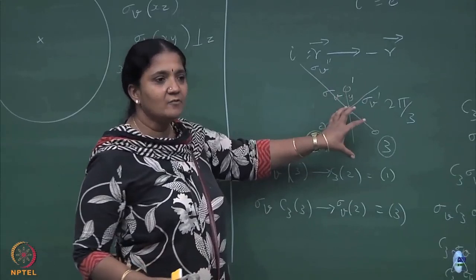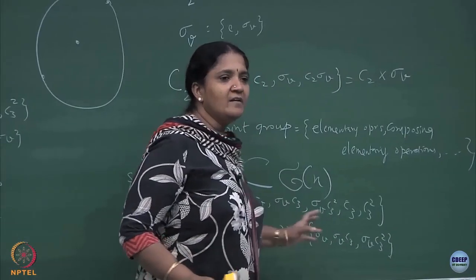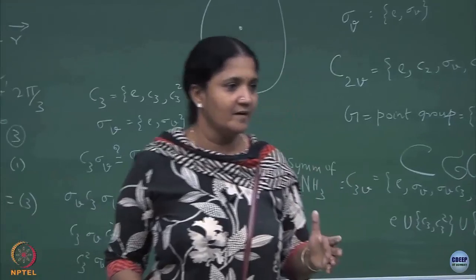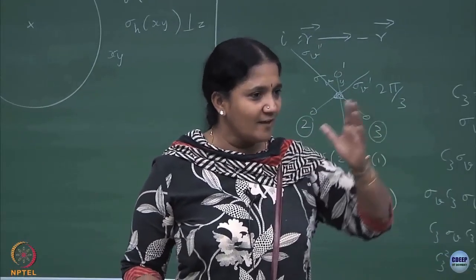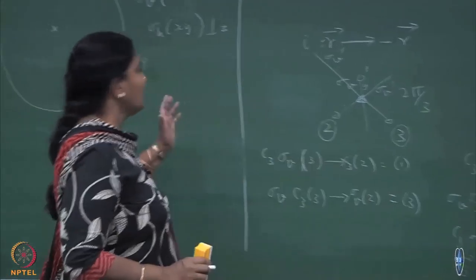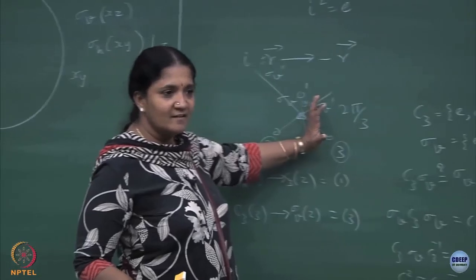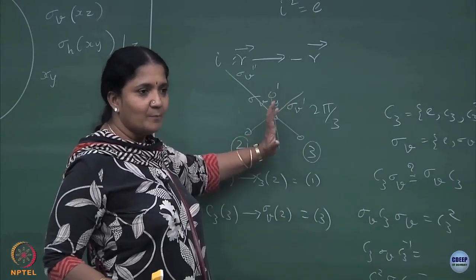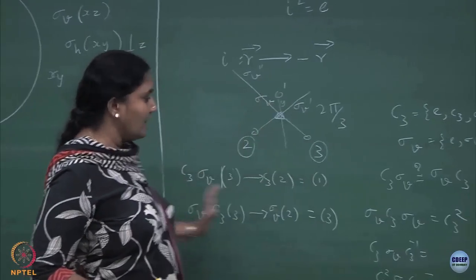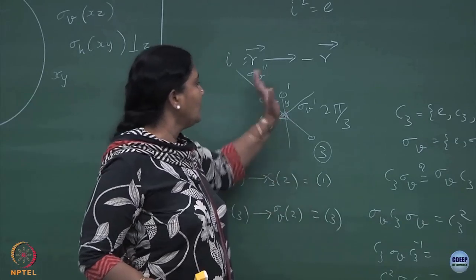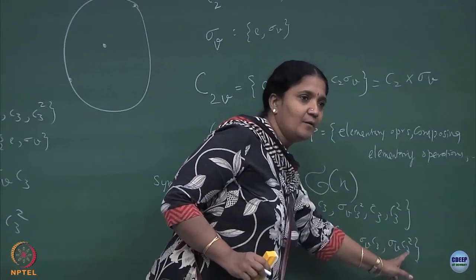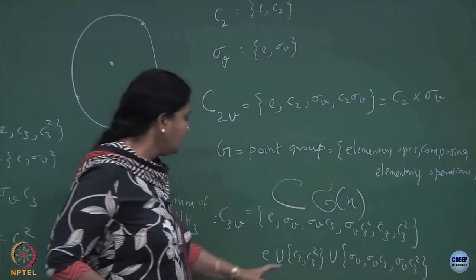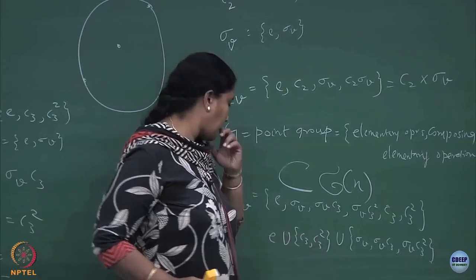There are 3 planes of symmetry and one principal axis. You can show that if you have a principal axis and 3 planes, the 3 planes are related by similarity transformations — they are all conjugate to each other. That is why the 3 mirror-plane elements are conjugate to each other, and C_3 and C_3² are conjugate to each other.